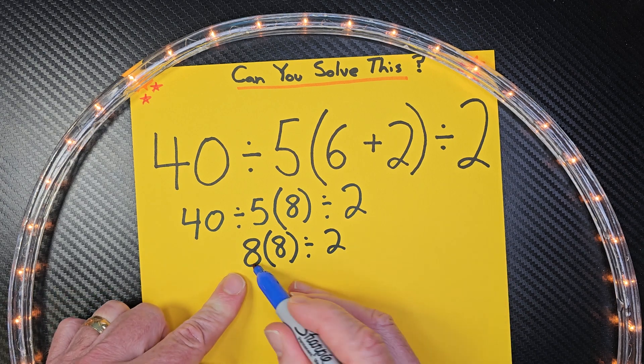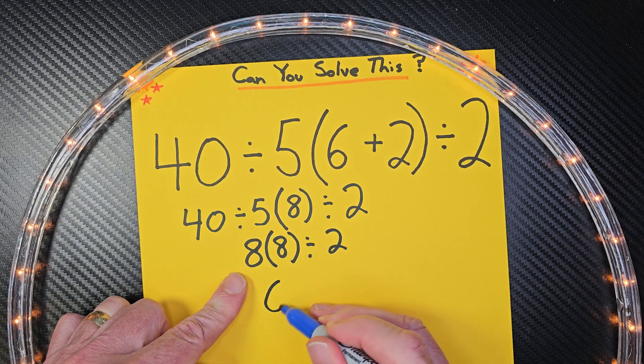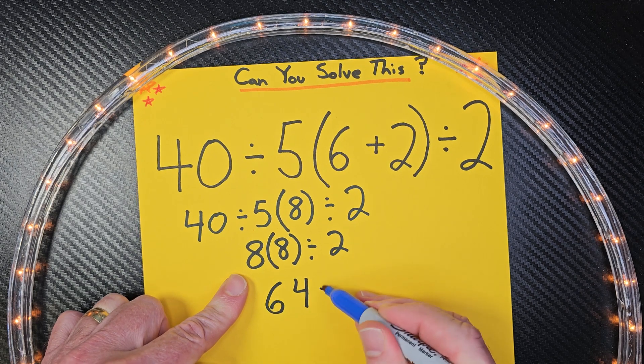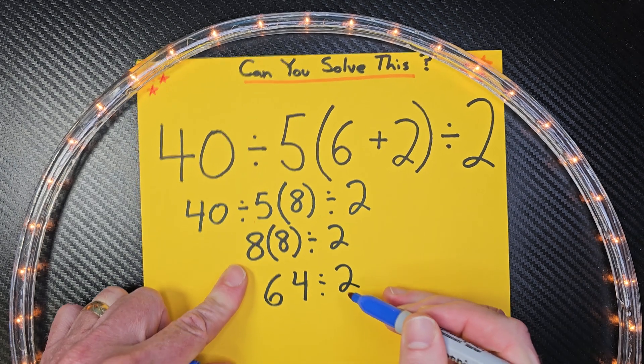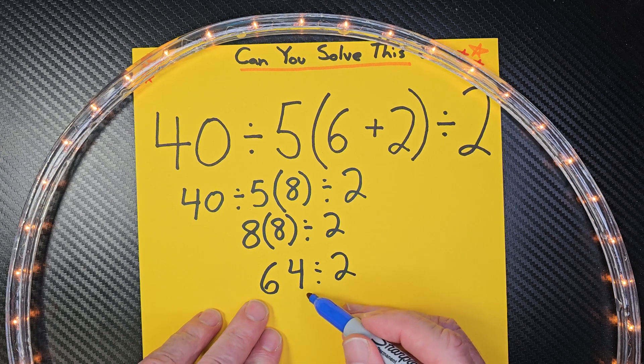So then 8 times 8? Sixty-four. Here's 64 divided by 2, and then 64. What is half of 64?